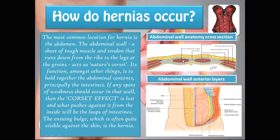Here are the sections of the abdominal wall — this is like a corset that keeps everything together in its place from the outside. From the anterior view you can see the abdominal wall layers and the intestines kept within the abdominal cavity. When we do have a hernia, these intestines are protruding through these layers.